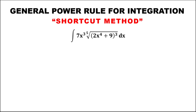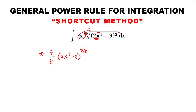For the next given, using the shortcut method: if there is x to the power 4 inside the parenthesis, then there must be x to the power 3 outside. So we have 7 over the derivative of 2x to the power 4, which is 2 times 4 equals 8, then times (2x⁴ + 9). For the exponent, add the two numbers: 3 plus 5 equals 8, so to the power 8 over 5, over 8, also 8 over 5, plus C.